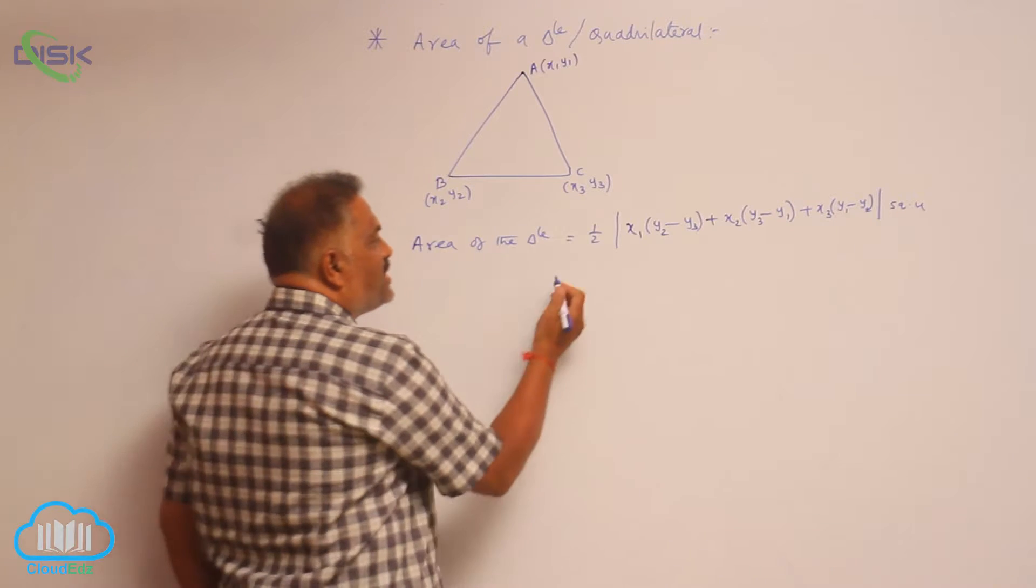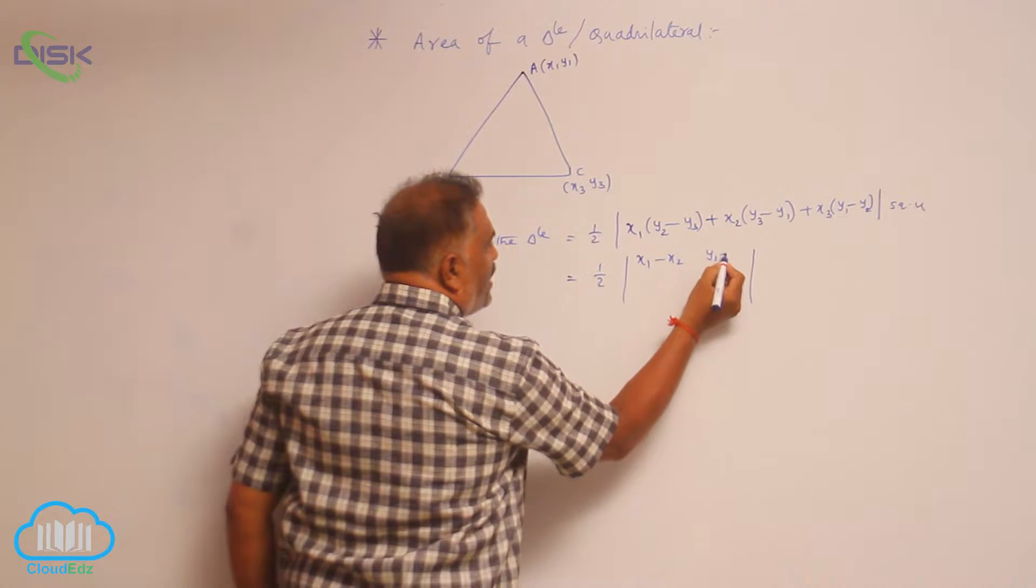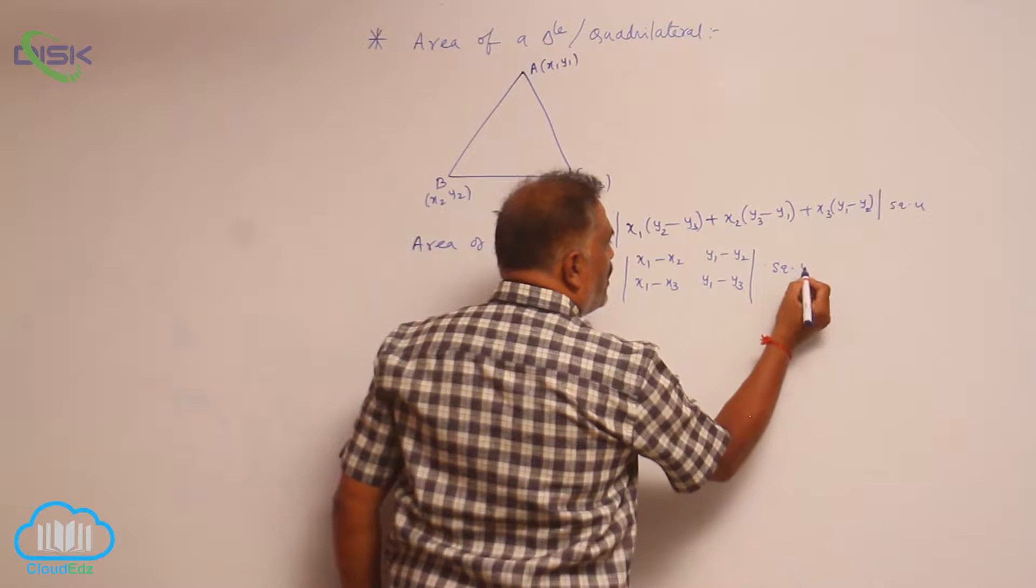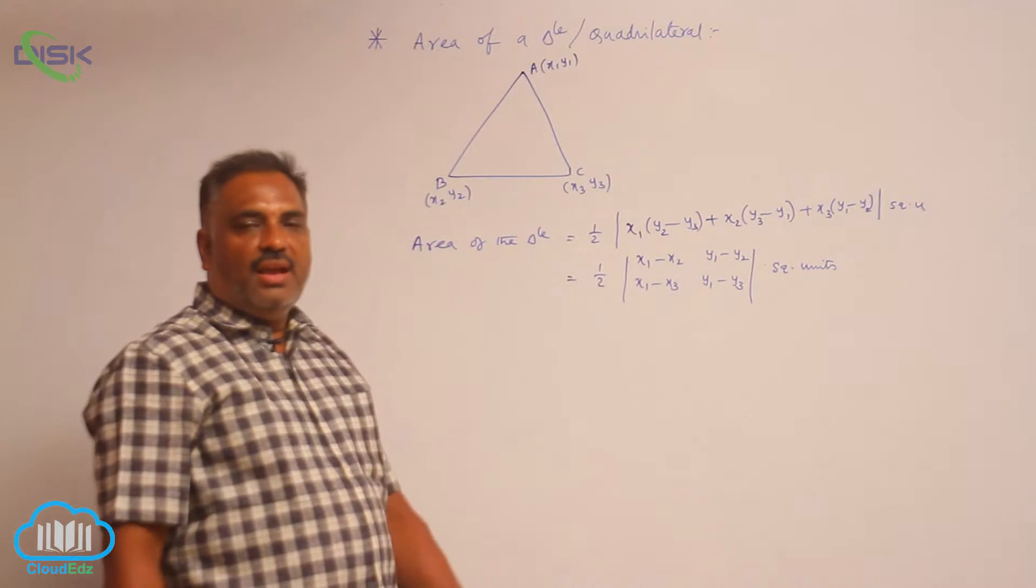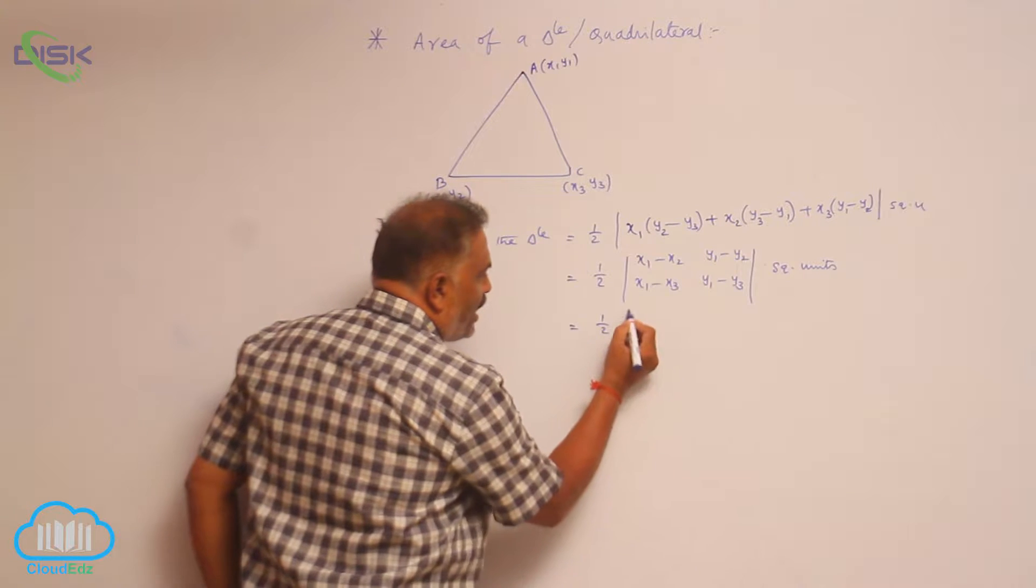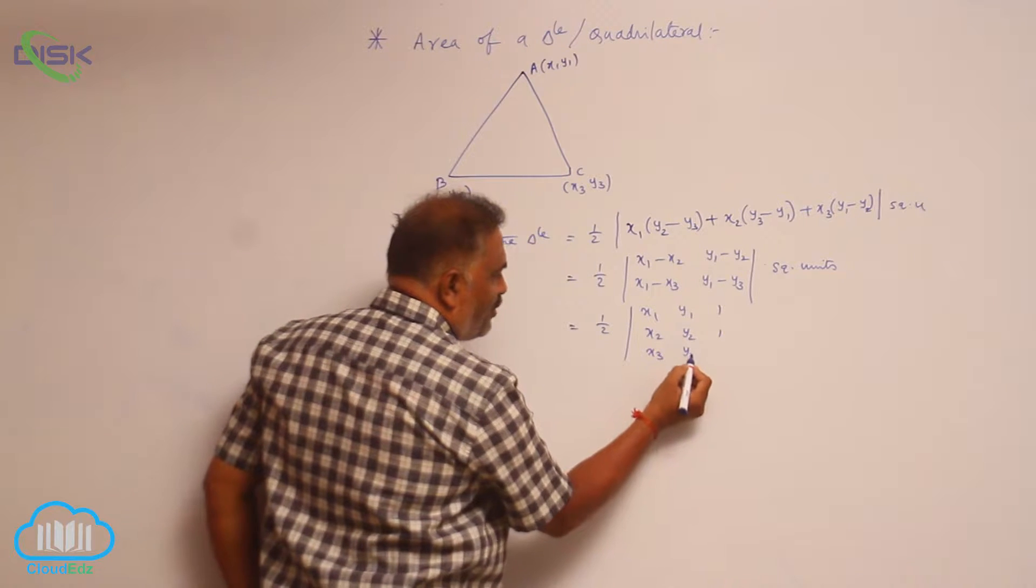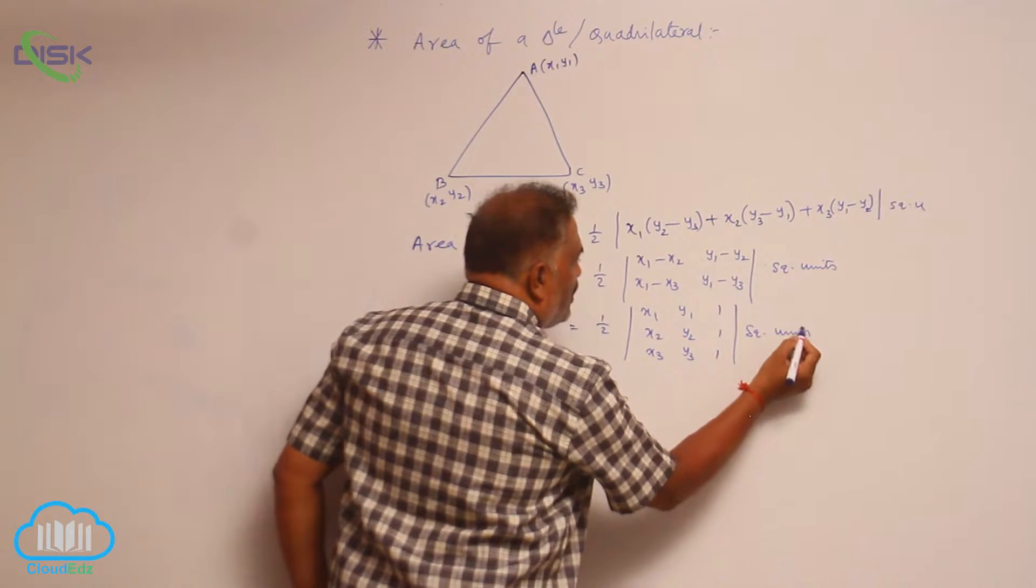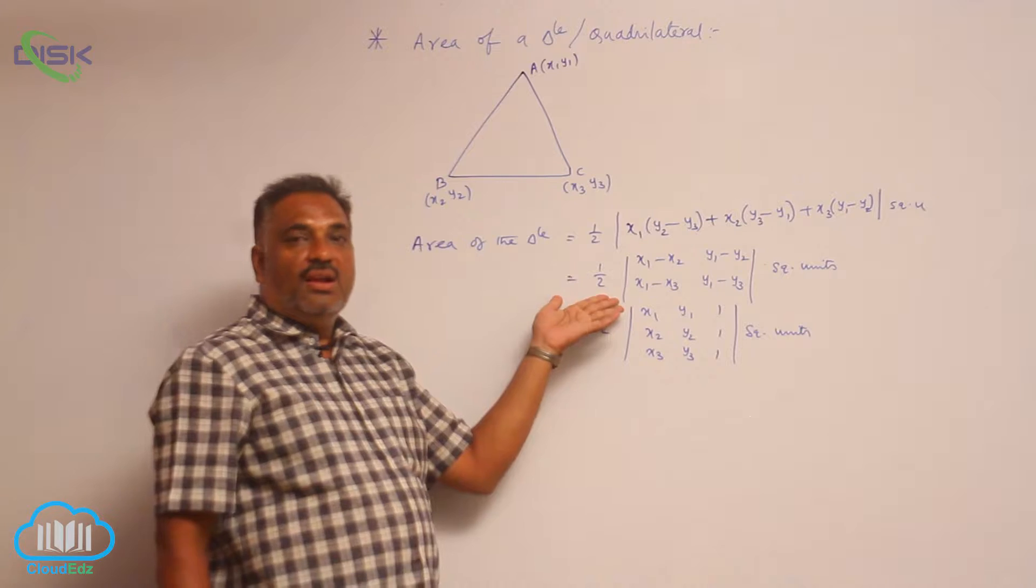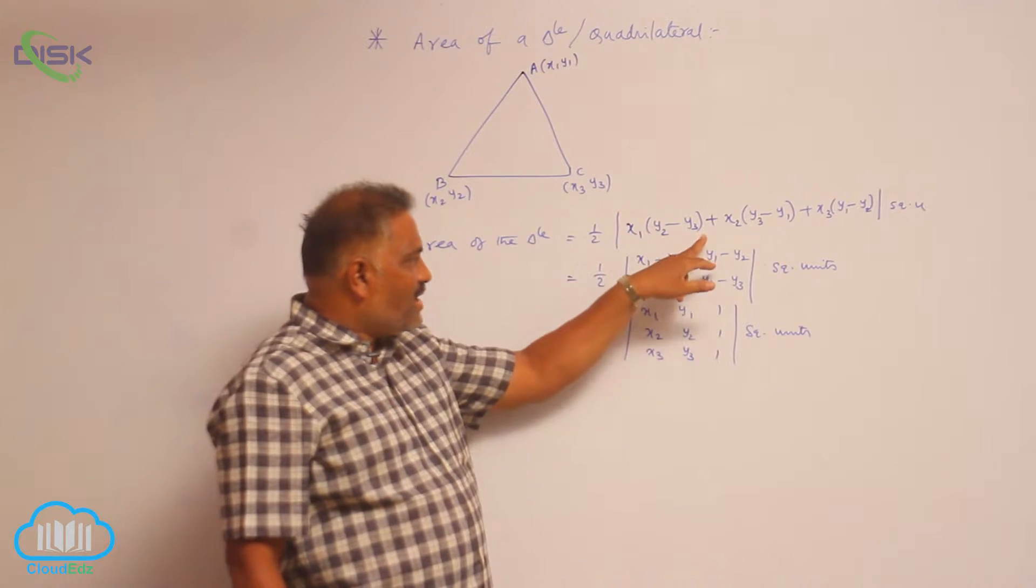Suppose you can use the same concept in taking a 2 by 2 determinant: (x1 - x2)(y1 - y2), (x1 - x3)(y1 - y3). This is also an easy method of calculating area of the triangle. In objective questions, majority of the cases we apply this formula only. One more formula is there: 1/2 |x1 y1 1; x2 y2 1; x3 y3 1| square units. Now you can use any one of these formulas. In general, for objective purposes we use the second formula, and in special cases we use the third formula, whereas for board examination we can apply either first or second one.